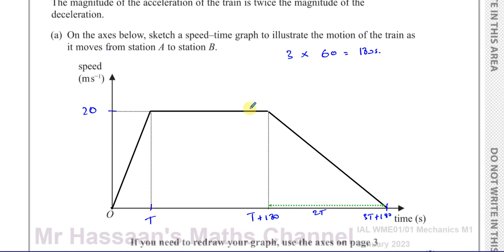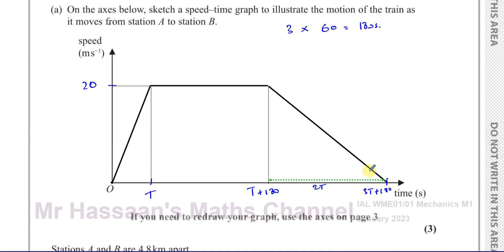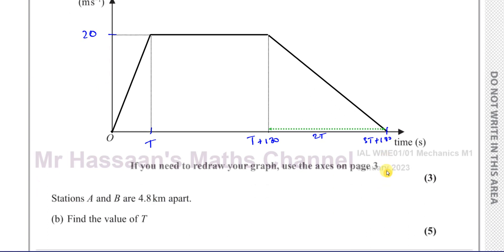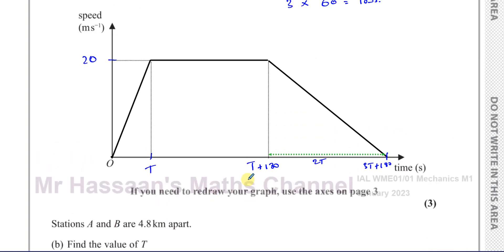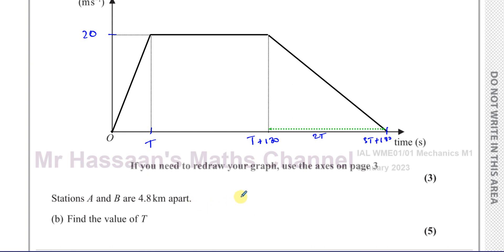So that's how we draw the speed-time graph — we should show the key values and make the acceleration phase steeper than the deceleration phase. Both phases are straight lines since the motion is uniform. Now, part b: stations A and B are 4.8 kilometers apart, so in meters that is 4,800 meters. We need to find the value of T.